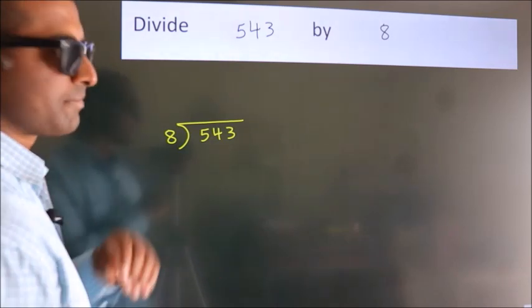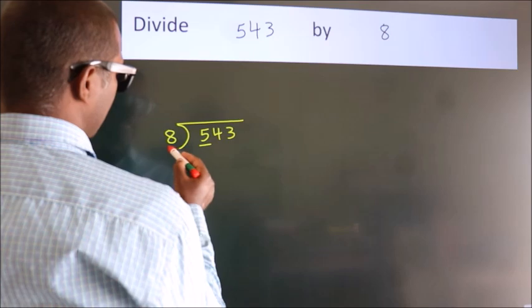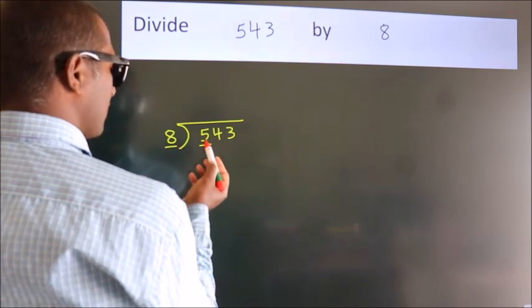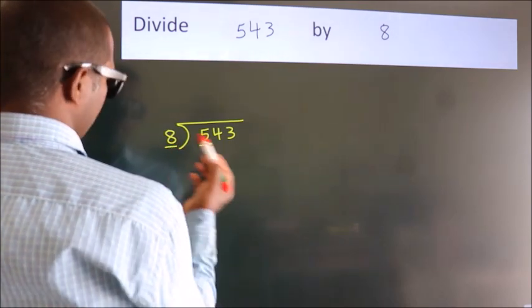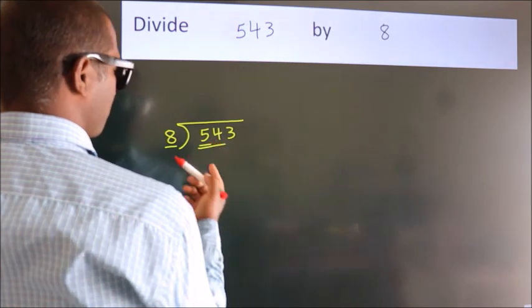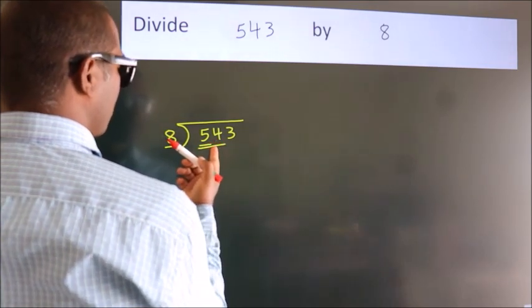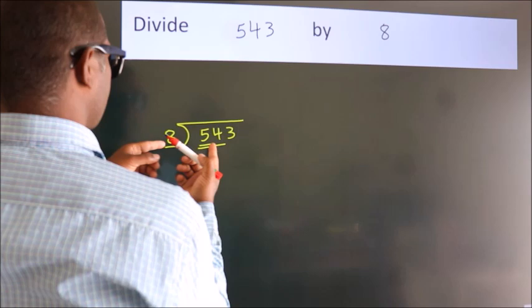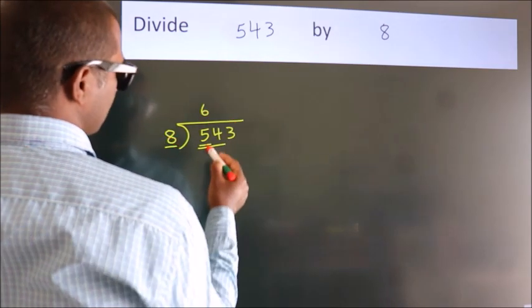Next. Here we have 5, here 8. 5 is smaller than 8, so we should take 2 numbers: 54. A number close to 54 in the 8 table is 8 times 6 equals 48.